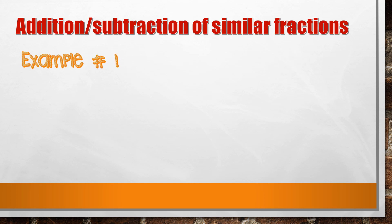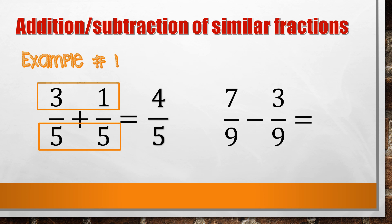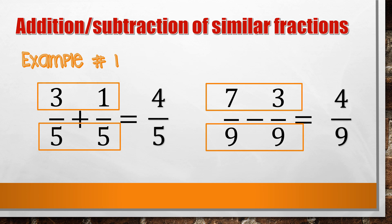Let us try example number 1: 3/5 plus 1/5. To add similar fractions, we copy the denominator and add the numerators. For subtracting similar fractions, we also copy the denominator and then subtract the numerators. Therefore, 3/5 plus 1/5 equals 4/5, and 7/9 minus 3/9 equals 4/9.